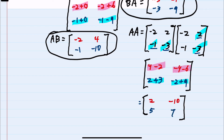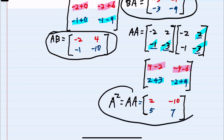This last result is our A times A matrix, or A squared. So we have found all three that we were asked to find.